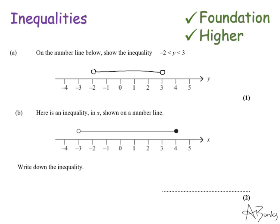In this second example they've already drawn a number line and are asking me what inequality it represents. It goes from minus three to four and we're talking about x. I write x with inequality symbols either side — I know it's from minus three to four, I just need to decide whether to put a line underneath. This end is an open circle, so x cannot be minus three — no equal sign there. But this end has a solid dot, which means x can be four, so I put a line underneath the inequality symbol on the four side.